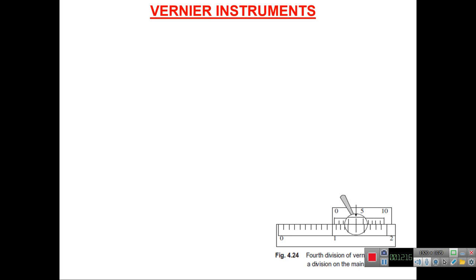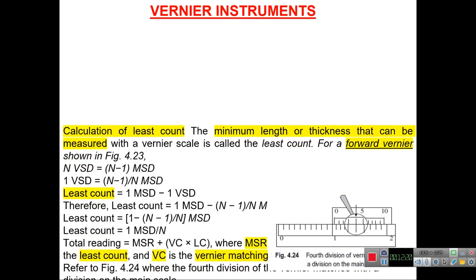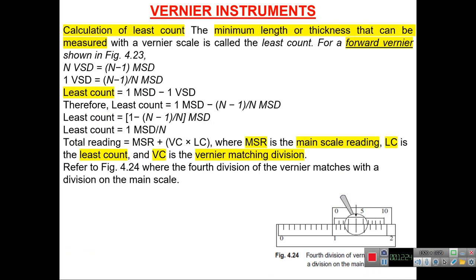The least count is defined as the minimum length or thickness that can be measured with the vernier scale. For a forward vernier, n vernier scale divisions equal (n−1) main scale divisions, so one vernier scale division equals (n−1)/n of a main scale division. The least count is calculated as: one main scale division minus one vernier scale division.